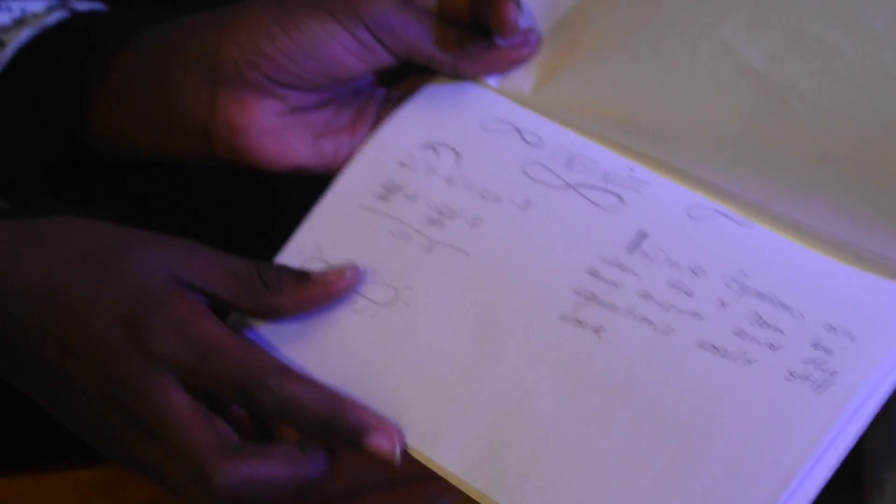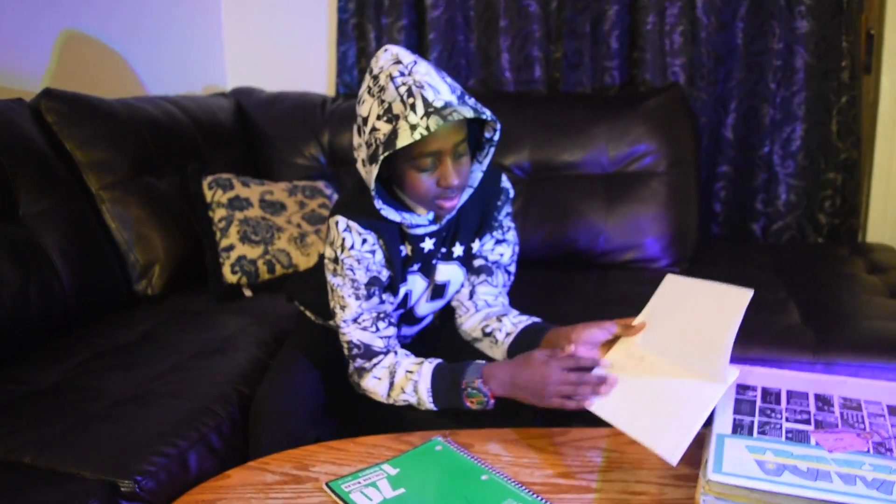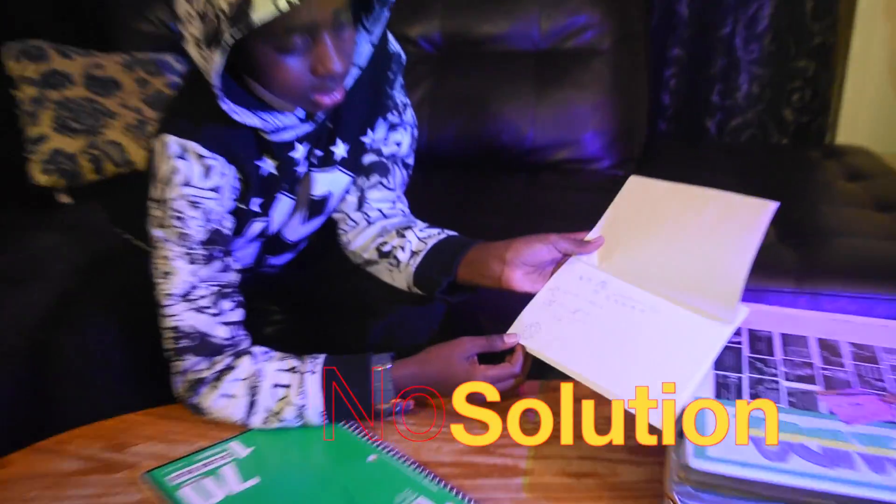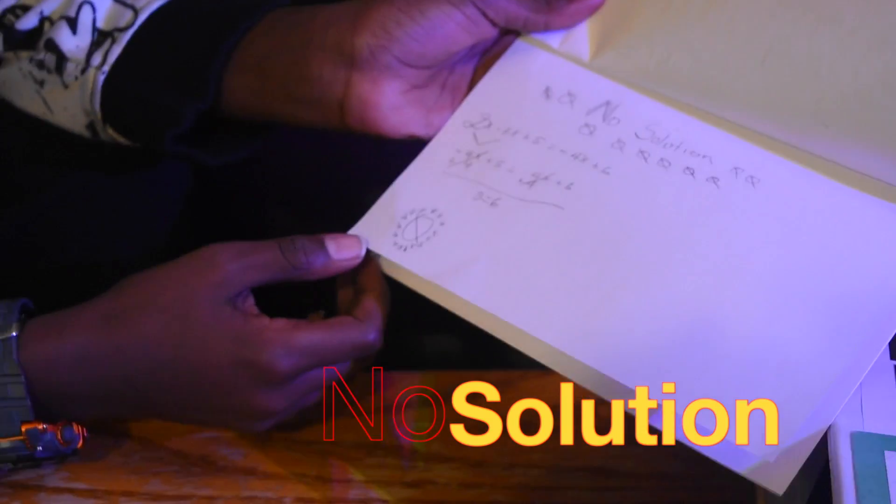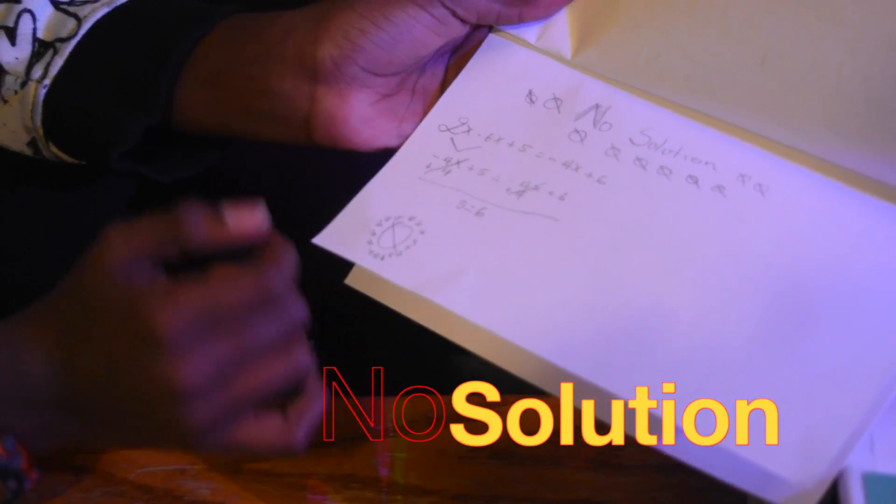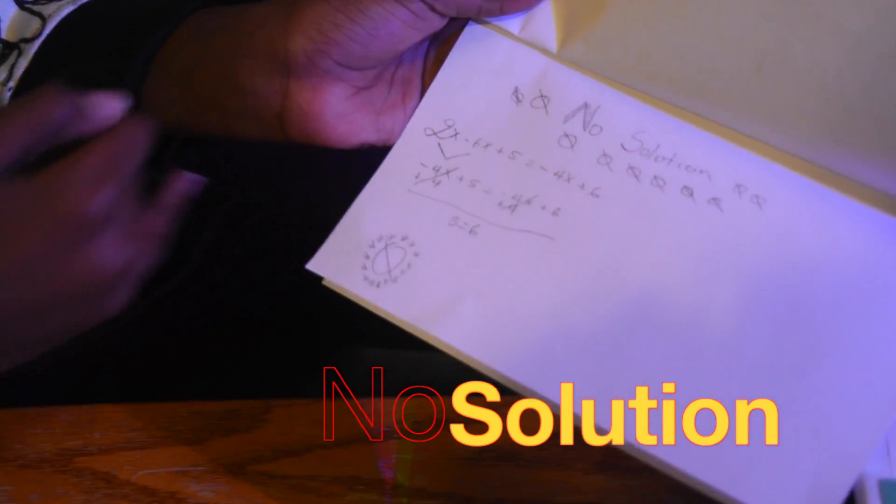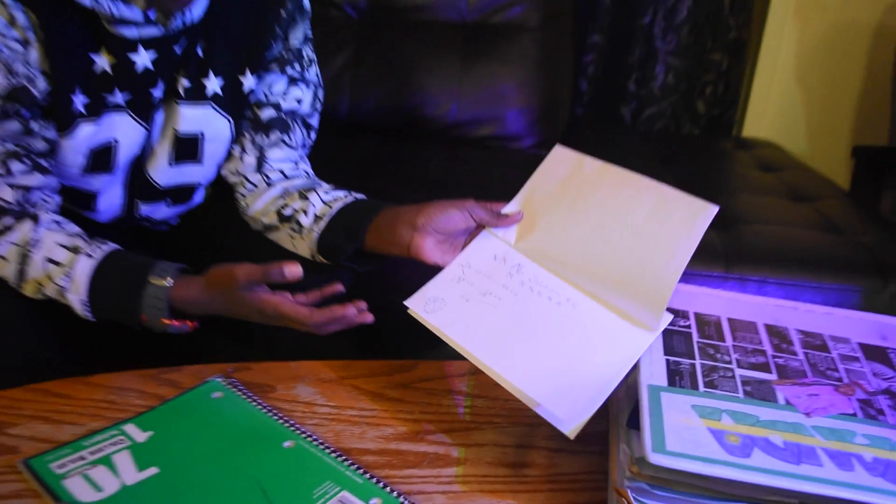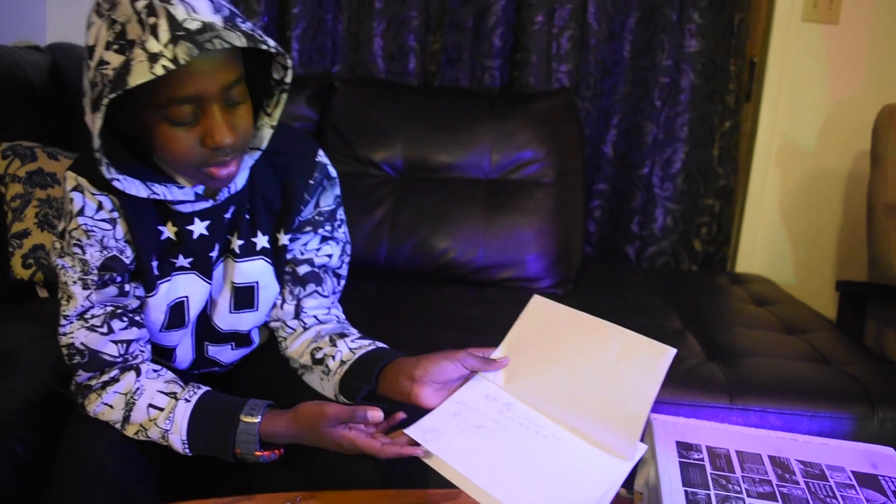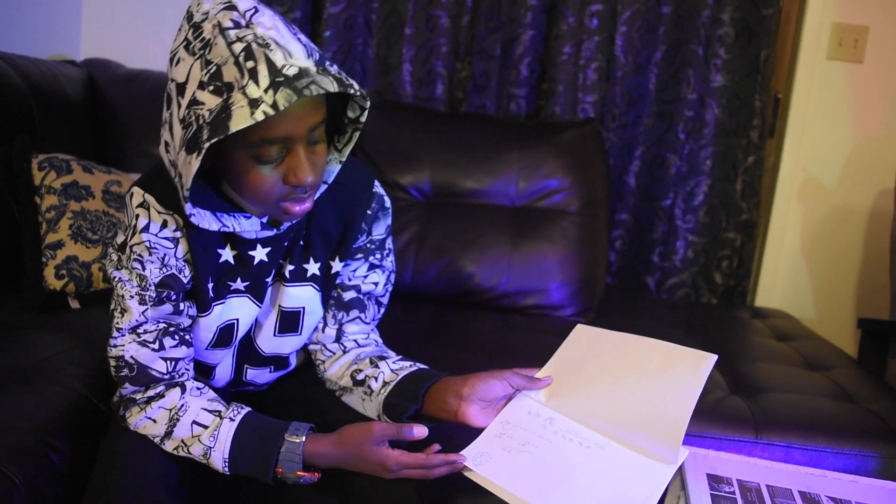The second type of equation is no solution. No solution is when there's no solution, like five equals six. Everybody knows that five and six are different numbers, so five does not equal six. That's no solution.